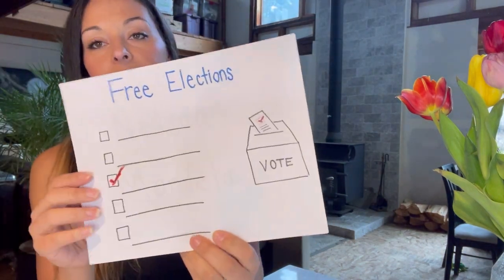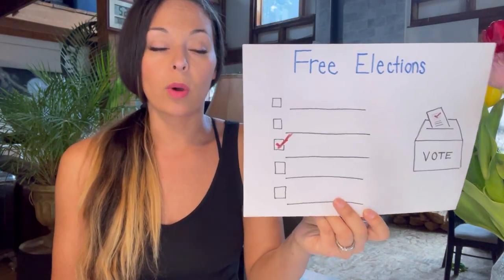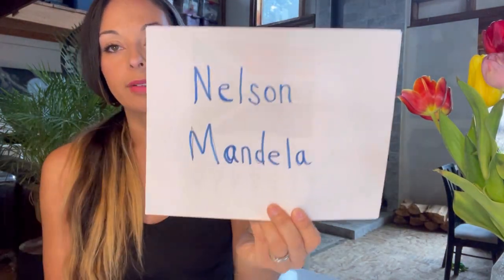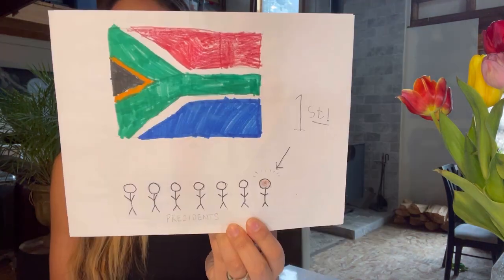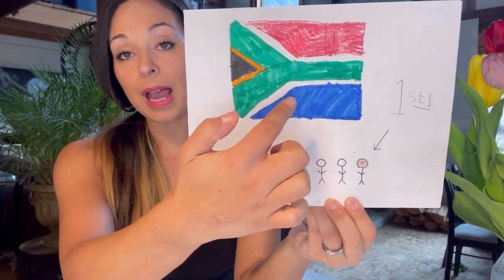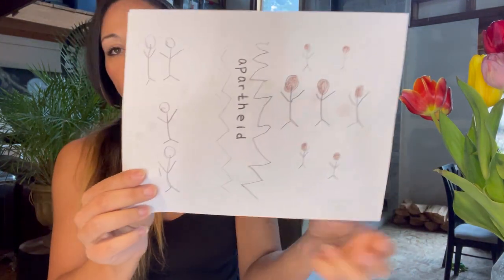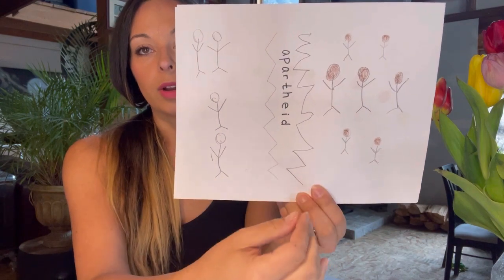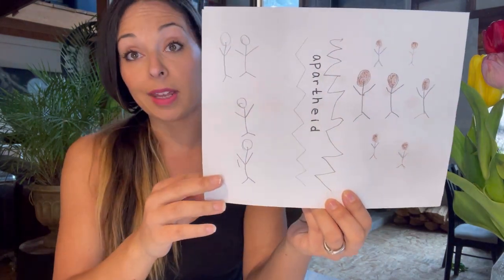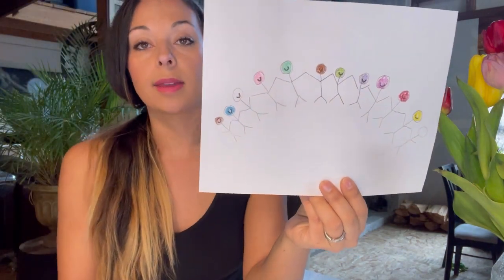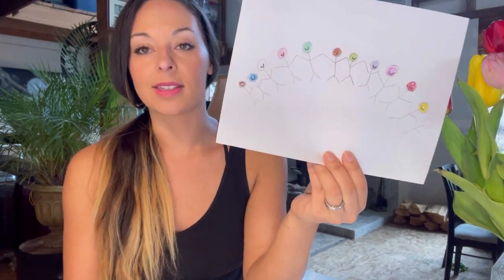Then when we say free elections, we just drew out what an election looks like. We talked about the power and the amazing opportunity of having elections, and what the difference is between a free election and not. Then we talk about Nelson Mandela — she wrote out his name. We have the flag of South Africa because Nelson Mandela became the first black president of South Africa. There were many leaders before and he was the first black president. Then on the next page, we're showing apartheid — where different people were on different sides of the line. The song ends with the apartheid ending and everybody could be together.